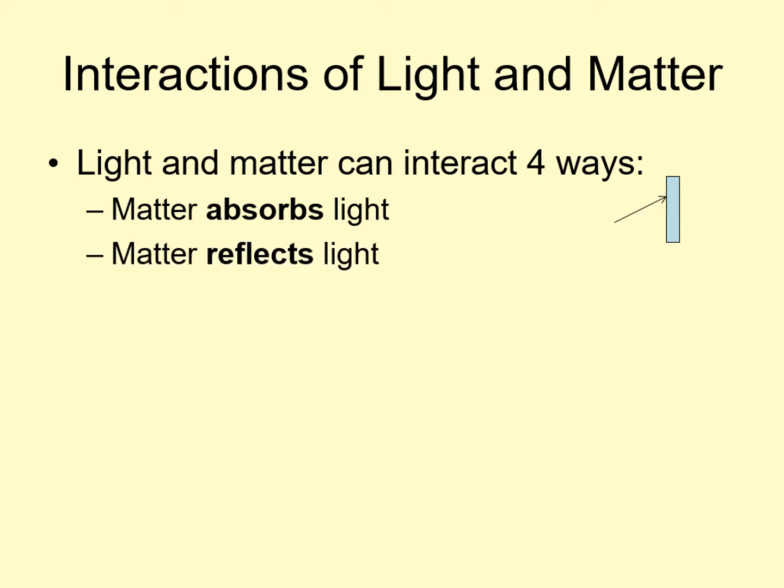Second, the matter can reflect the light. In this case, the light bounces off the matter and continues in a new direction. When you've got a very flat surface, the light may all bounce off in the same direction. A mirror is an example of this.